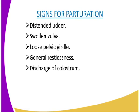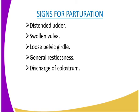The signs of parturition — how you know an animal is about to give birth — include: a distended udder that grows in size; swollen vulva, which is the external part of the female reproductive system; loose pelvic girdle; general restlessness; and finally, discharge of colostrum, which is a thick fluid.